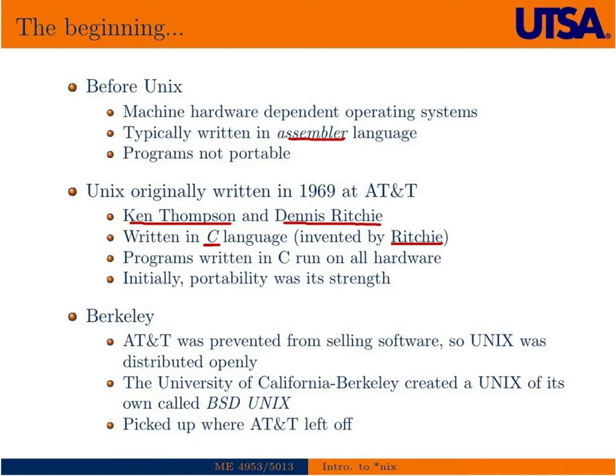Back then, there was a law that prevented AT&T from selling its software to make a profit, so they were only allowed to charge a nominal fee and distribute it mostly amongst academic universities and other research institutions. One of the first universities that took hold of this Unix software was the University of California at Berkeley. They took the original Unix written by Thompson and Ritchie and began developing their own, adding more features, picking up where AT&T left off. One of the most important ubiquitous features is the Vi Editor, which was developed at Berkeley and distributed with the first release of their own software, which they called BSD Unix.